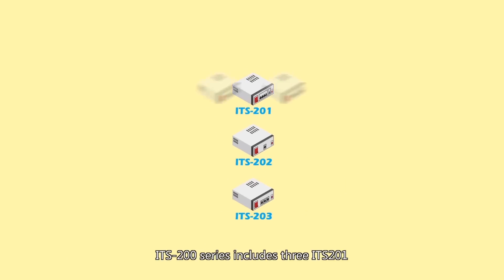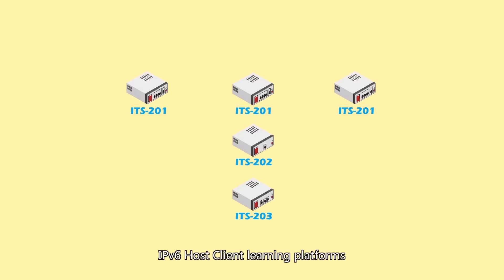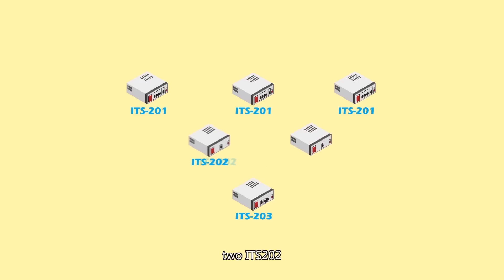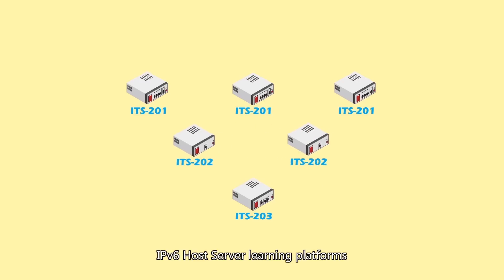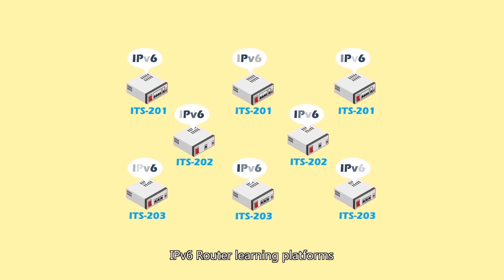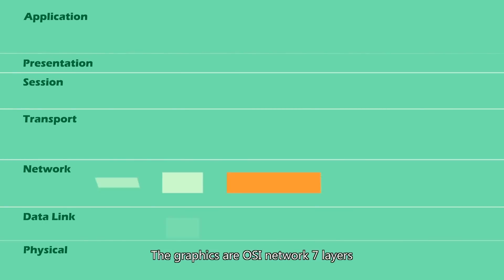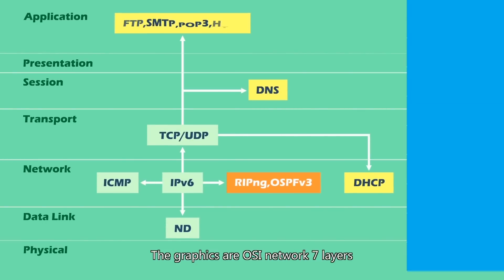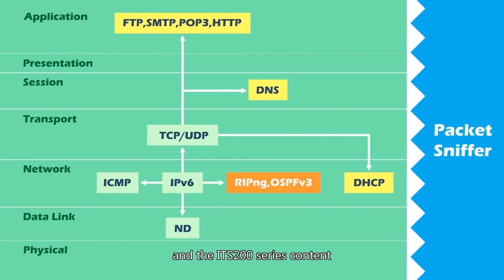The ITS200 series includes three ITS201 IPv6 host client learning platforms, two ITS202 IPv6 host server learning platforms, and three ITS203 IPv6 router learning platforms, all of which use IPv6. The graphics are based on the OSI network seven layers, and the ITS200 series content corresponds to the hierarchical layers of the technology.